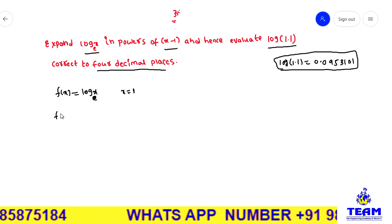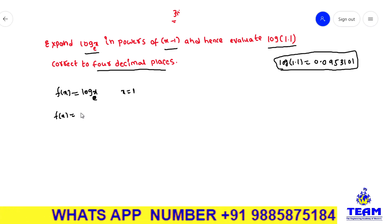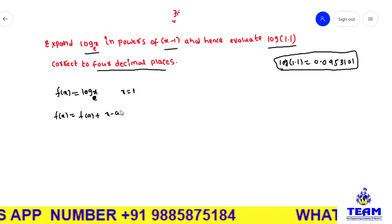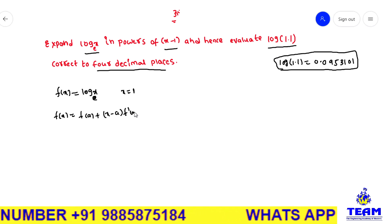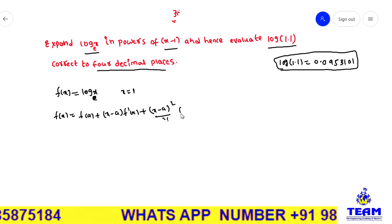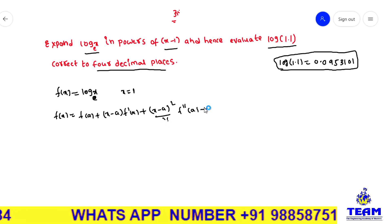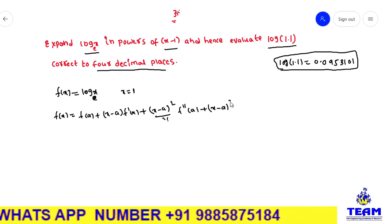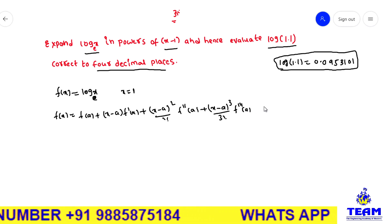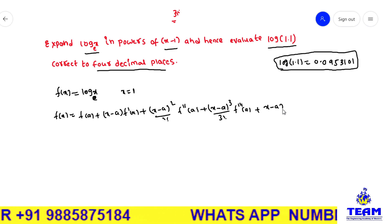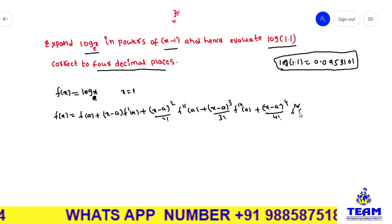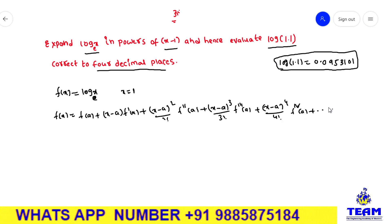First I am writing the Taylor series expansion of f(x) about x = a: f(a) + (x − a)·f'(a) + (x − a)² / 2! · f''(a) + (x − a)³ / 3! · f'''(a) + (x − a)⁴ / 4! · f''''(a) + and so on.